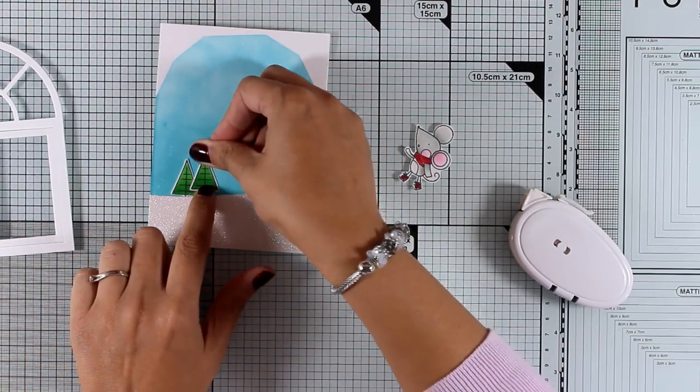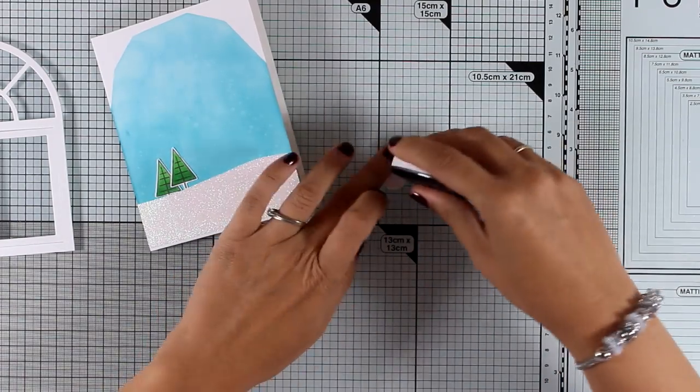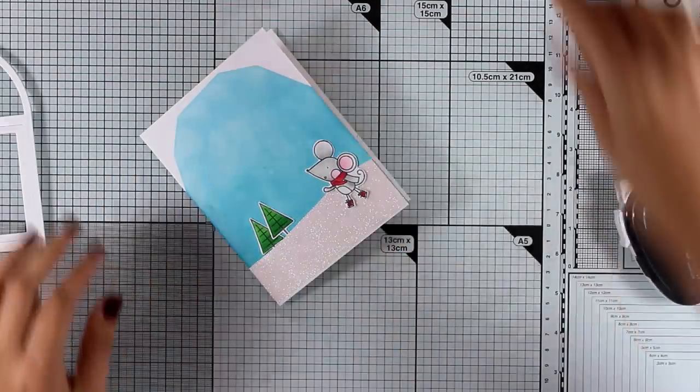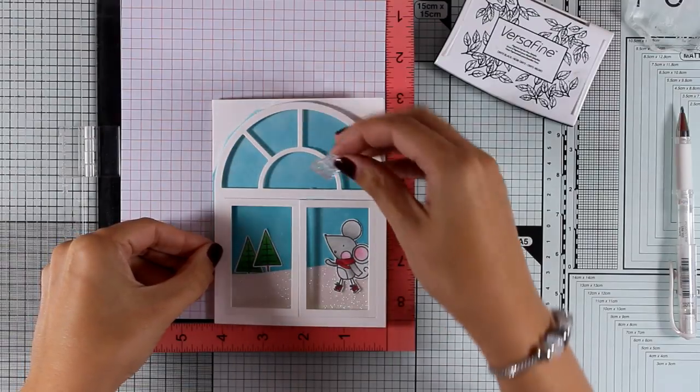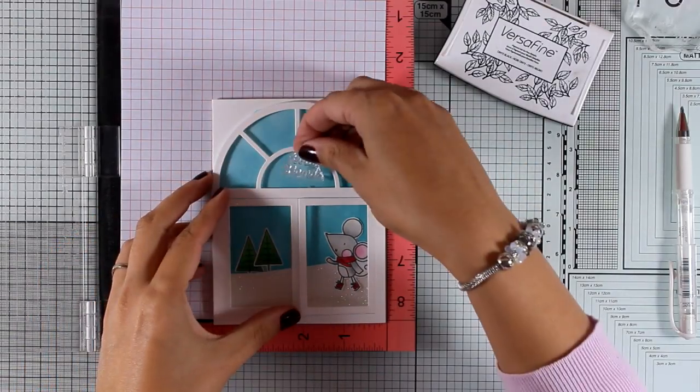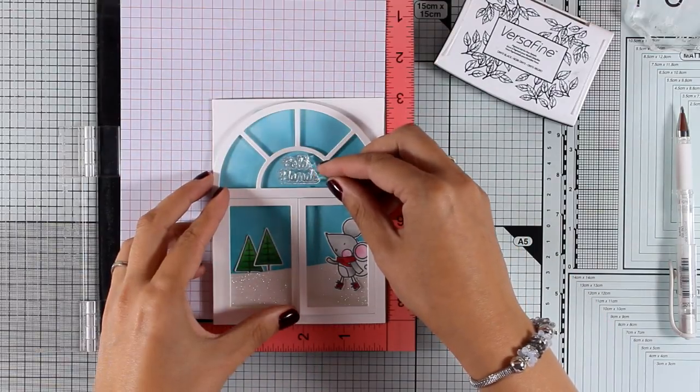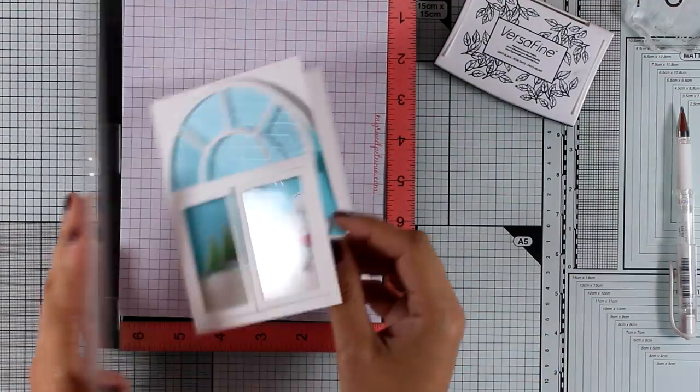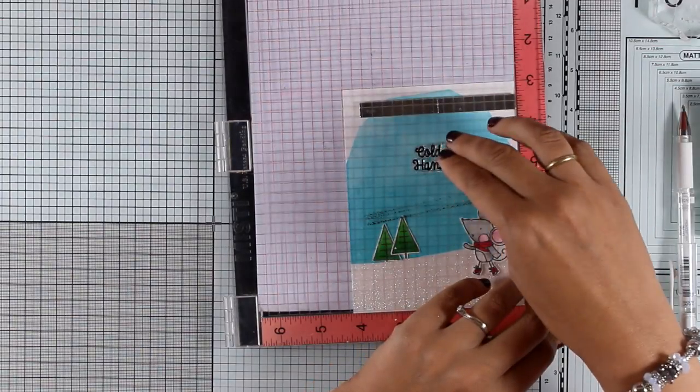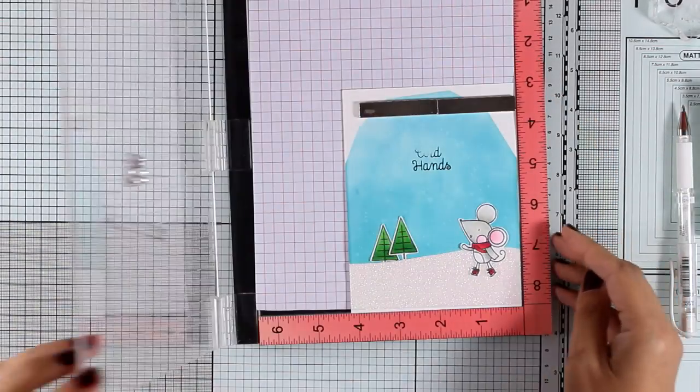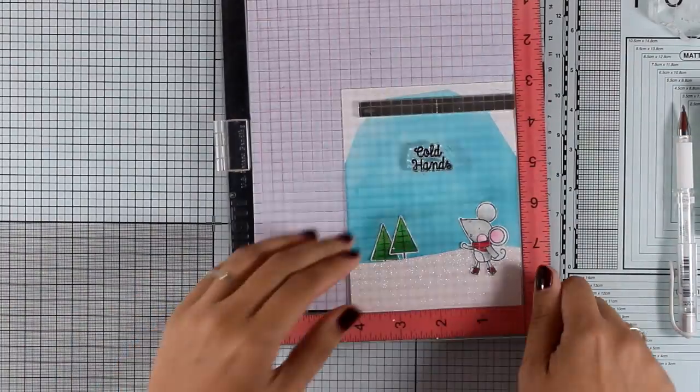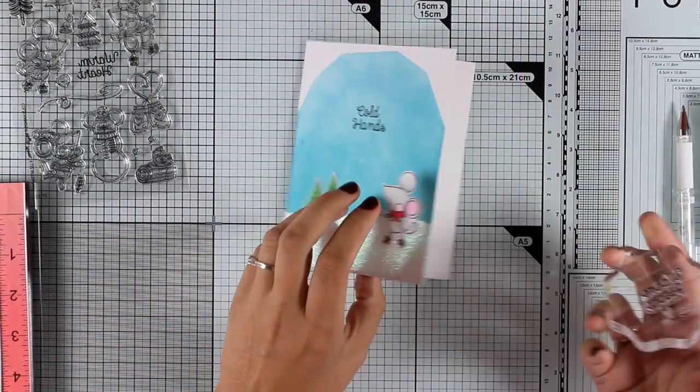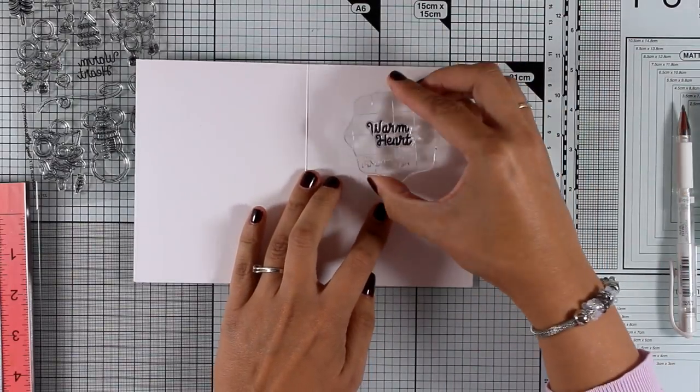I use some tape adhesive at the back of all three of those images so that I don't add too much bulk. I'm just making sure that they are going to show nicely through the window. Before I stick the window, I want to stamp my sentiment and I want that to be centered at the top of my arch. I'm going to place that there. I'm going to close the door of my MISTI. I'm going to remove the window, and I'm going to stamp that directly on top of my sky so I know that it's positioned correctly and the recipient will be able to clearly read it through the top of my window. To complete my sentiment on the inside, I'm going to stamp 'warm heart.'